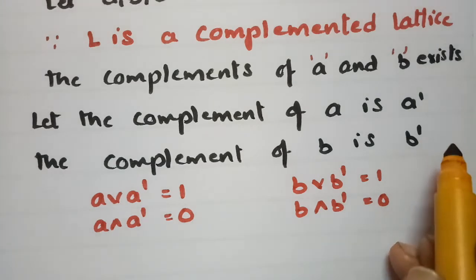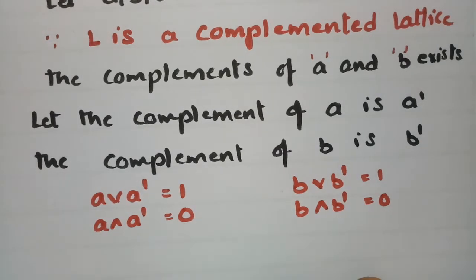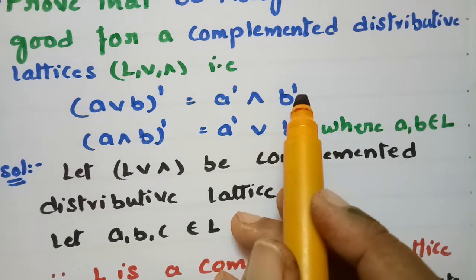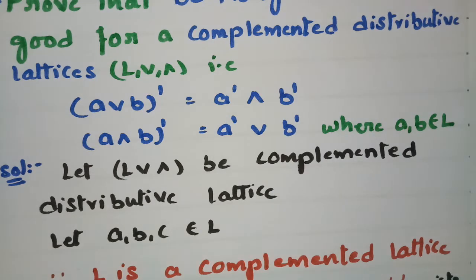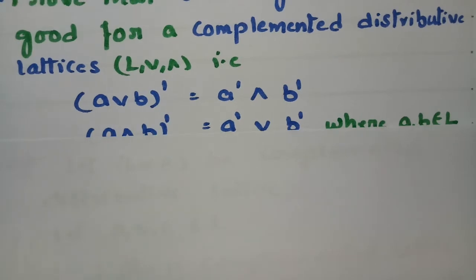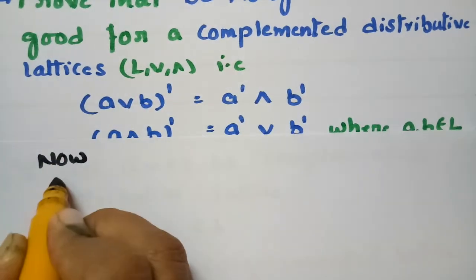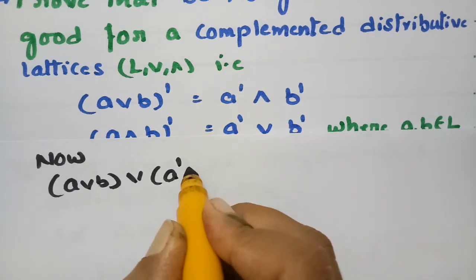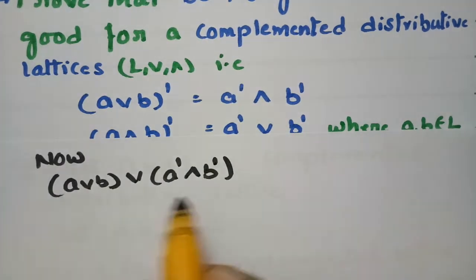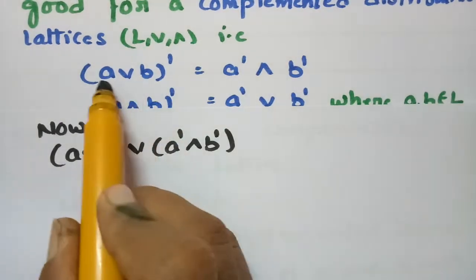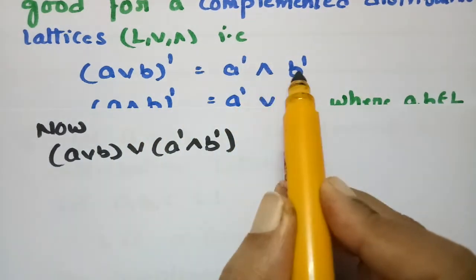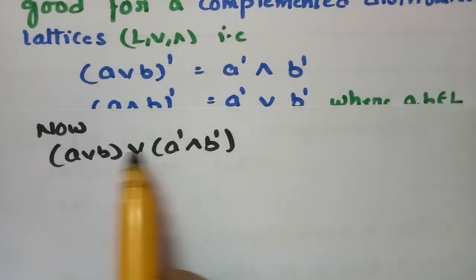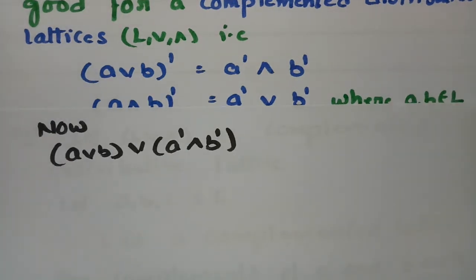Now let's prove that (A∨B)' = A'∧B'. Since L is a complemented lattice, we need to show that (A∨B)∨(A'∧B') = 1 (the greatest element) and (A∨B)∧(A'∧B') = 0 (the least element).